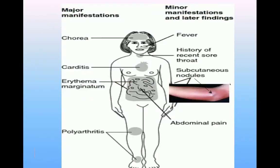The major manifestations of rheumatic fever include chorea — involuntary movements of the face or limbs due to brain involvement; carditis — damage to myocardial or endocardial tissue especially the mitral and aortic valves, resulting in vegetations; erythema marginatum — red rings on the torso; and polyarthritis — inflammation of large or small joints causing pain and swelling.